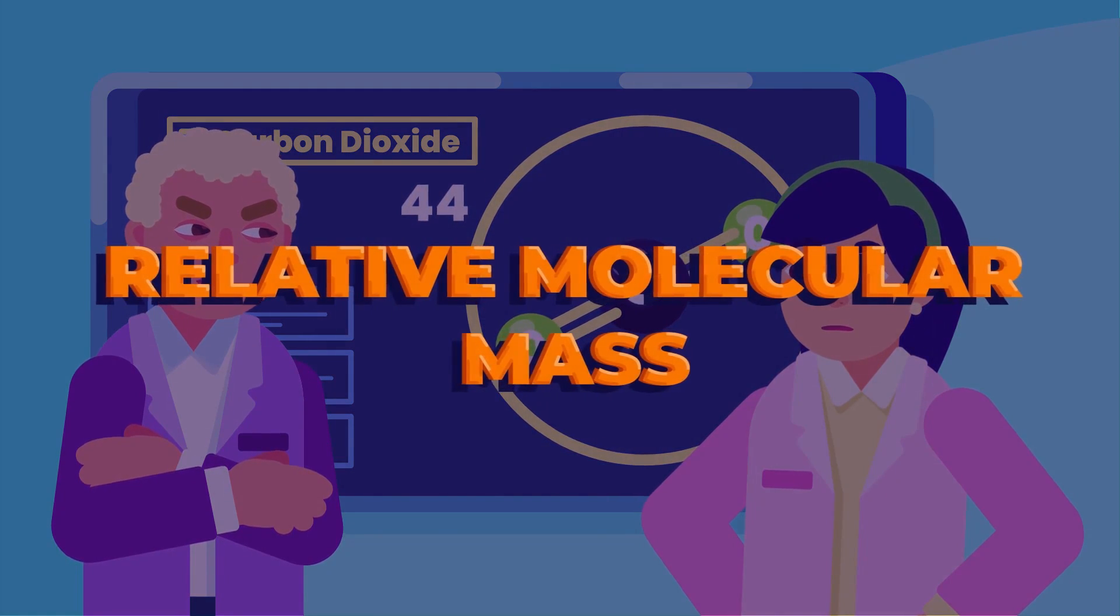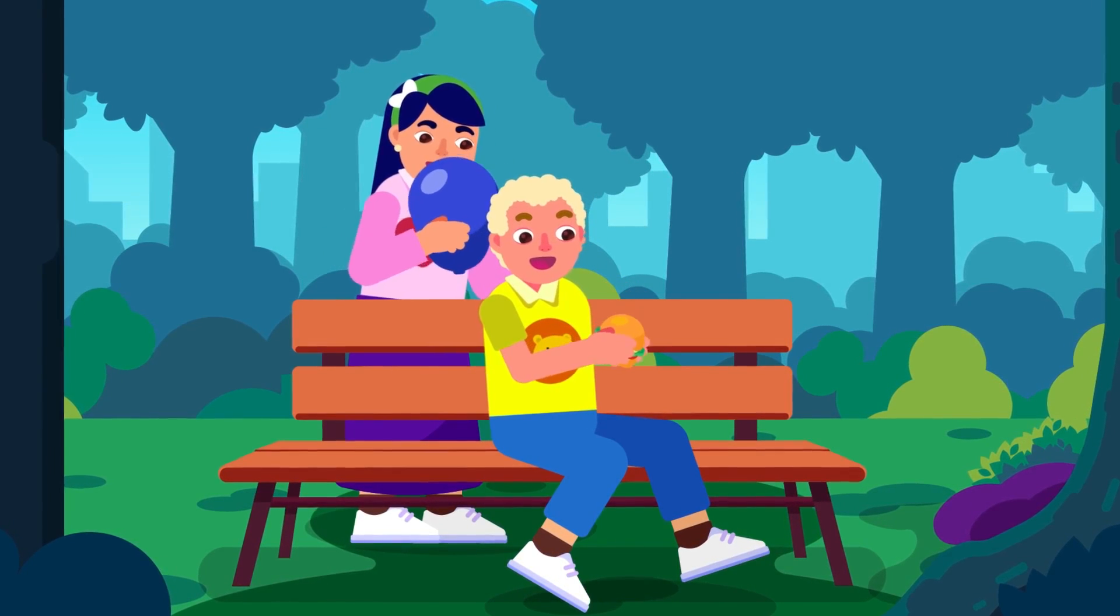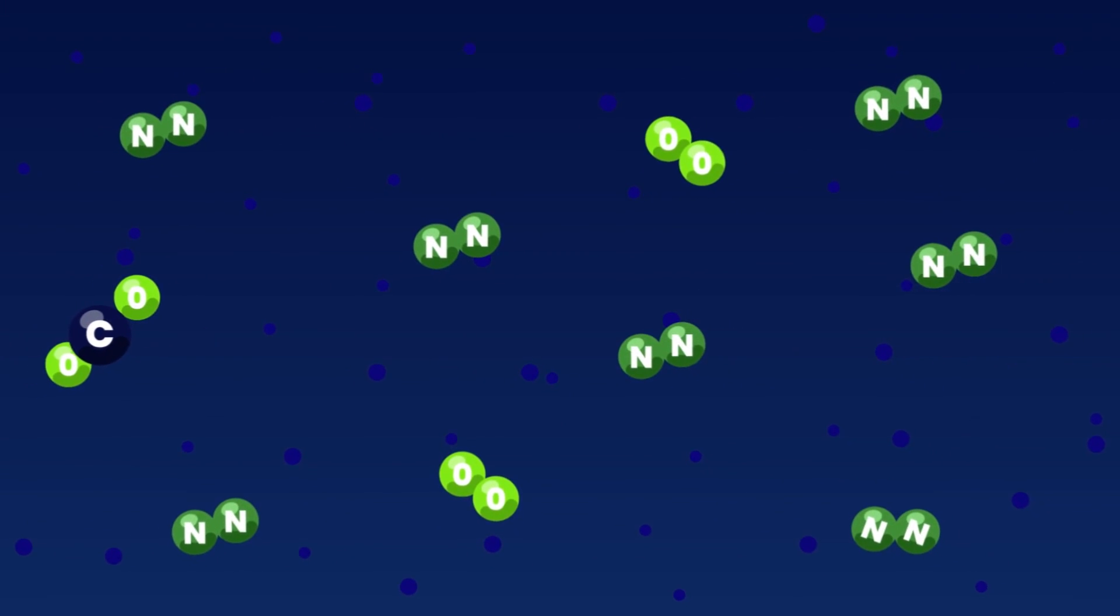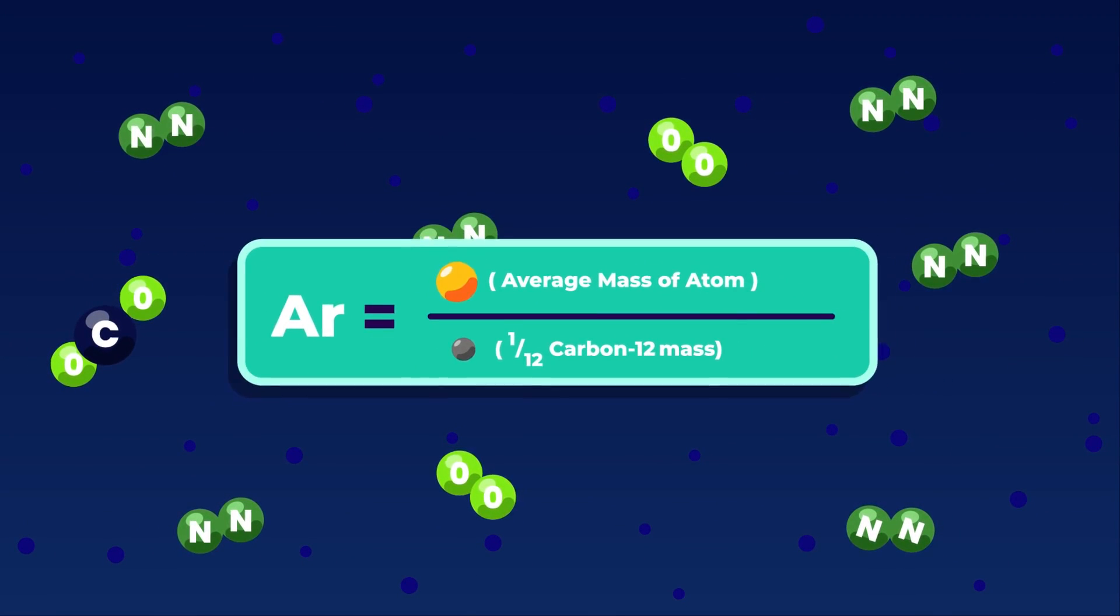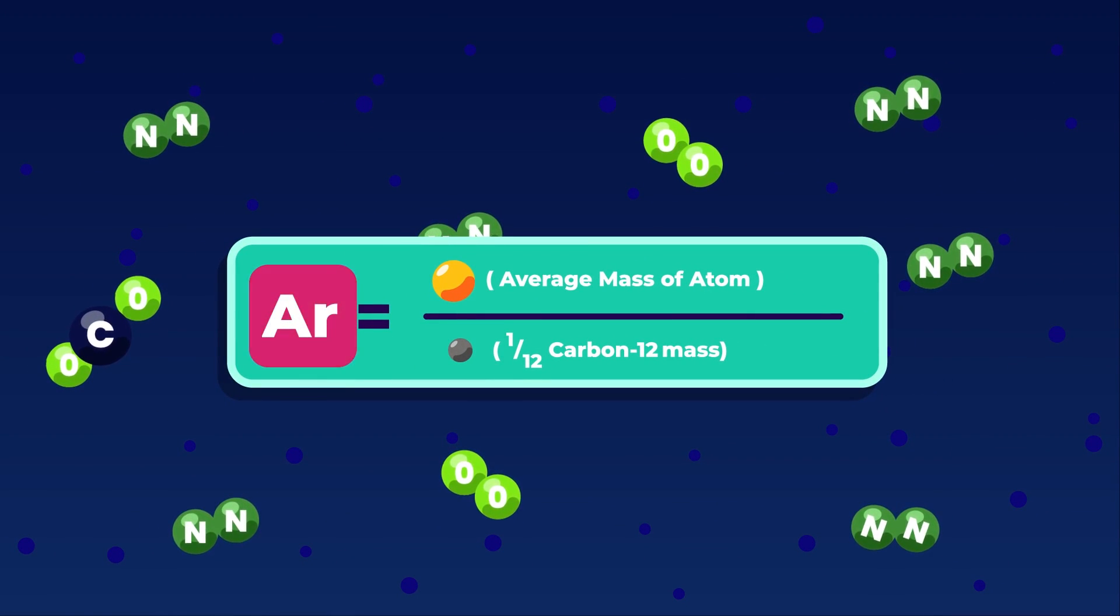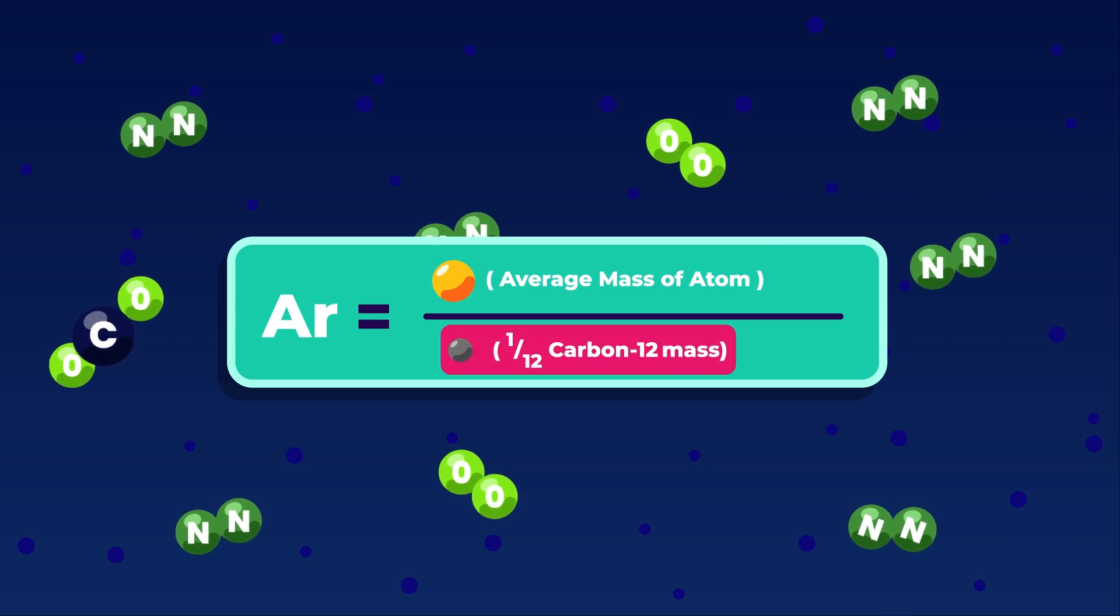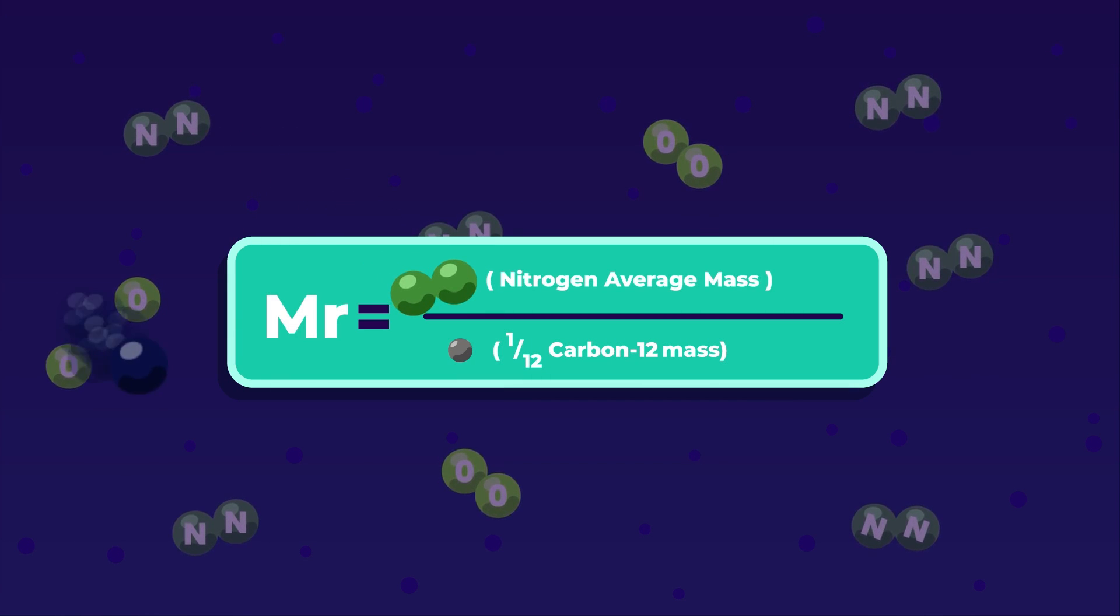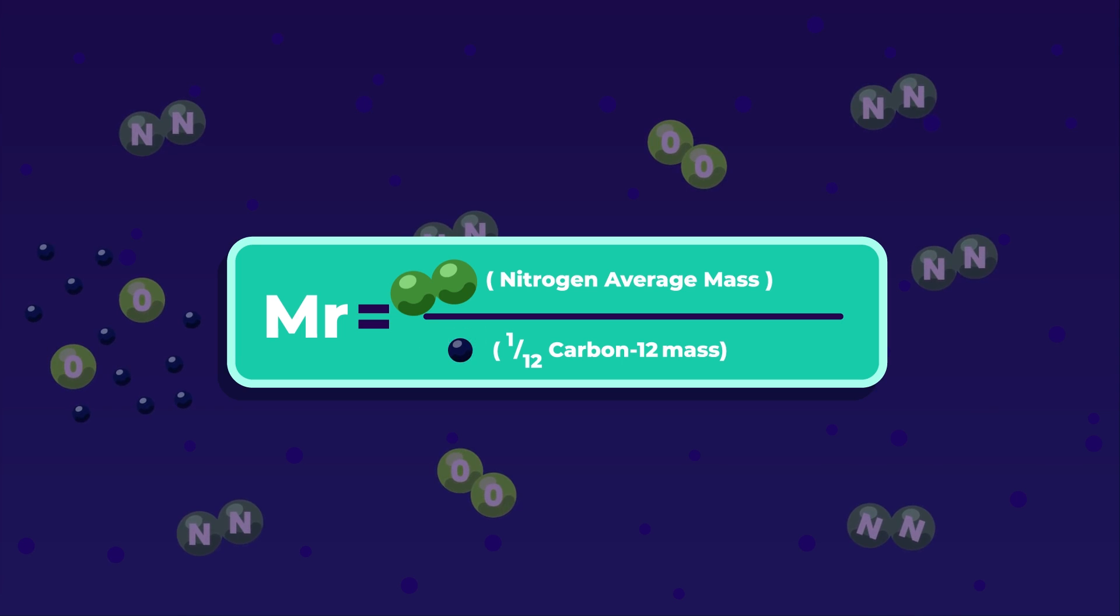Relative molecular mass: The majority of the air around us is composed of nitrogen molecules N2. To obtain its relative molecular mass, or MR, we are using the same formula that is used to calculate the relative atomic mass we have discussed before, which is the average mass of a nitrogen molecule divided by a twelfth of the mass of a carbon-12 atom.